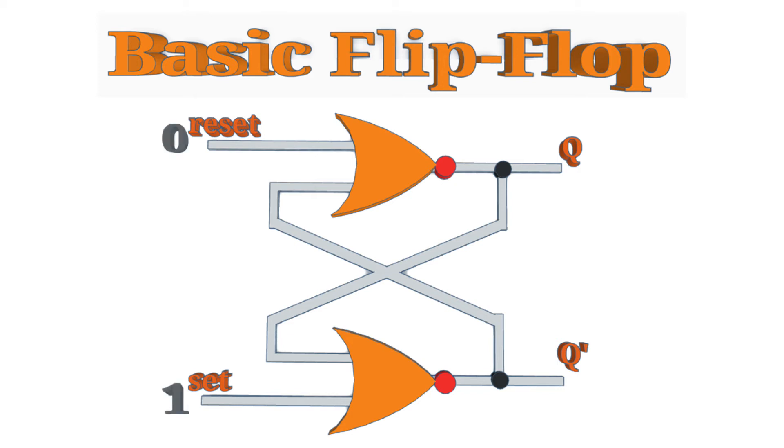With the set at one and reset at zero, then the bottom NOR gate will always give a zero output. This sets Q prime to zero. It also puts a zero to the top NOR gate. The top NOR gate then gives a one output.